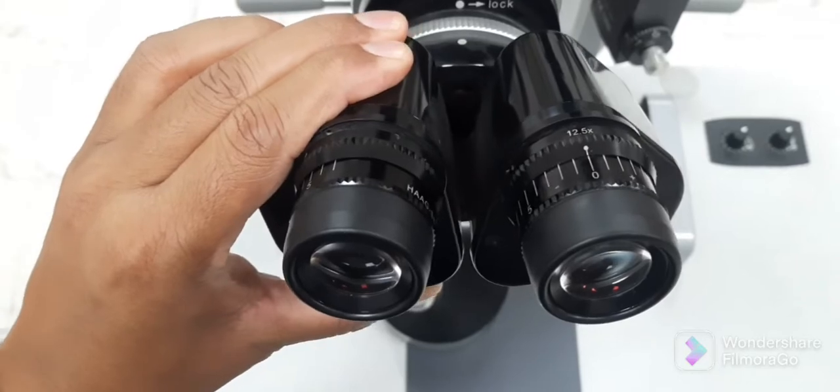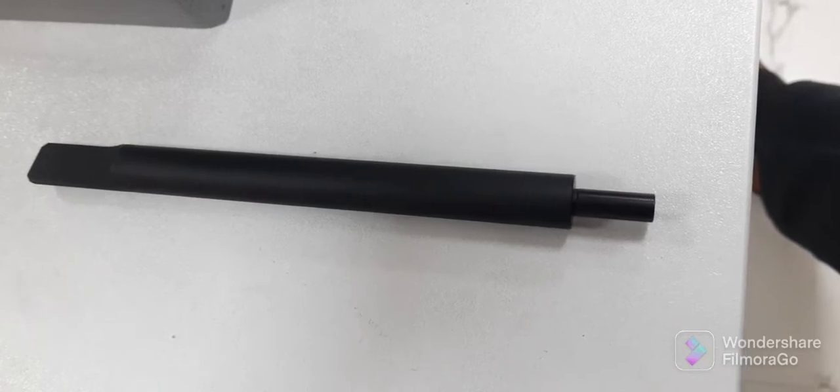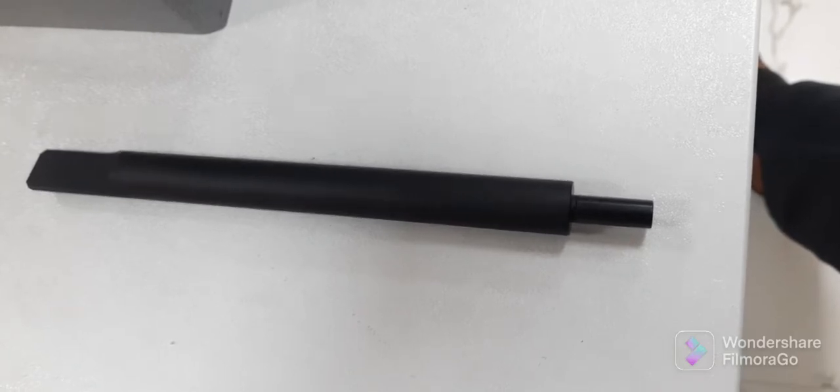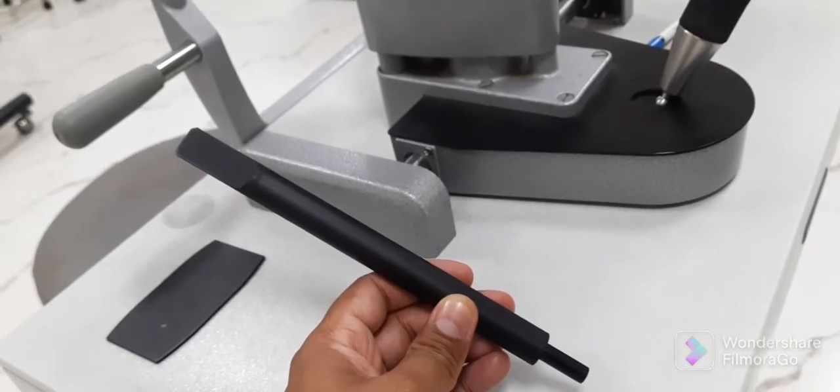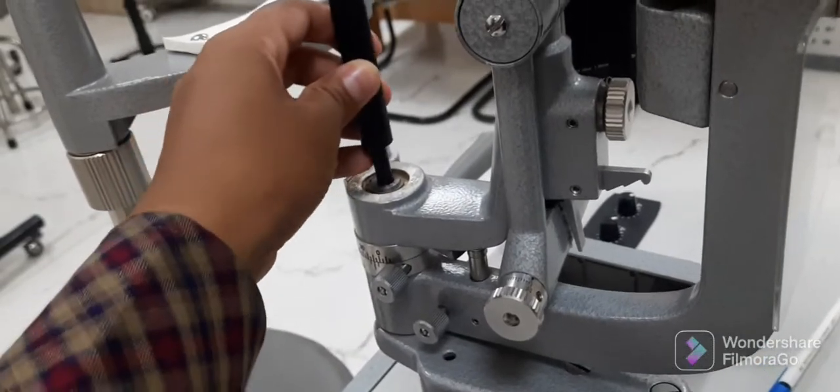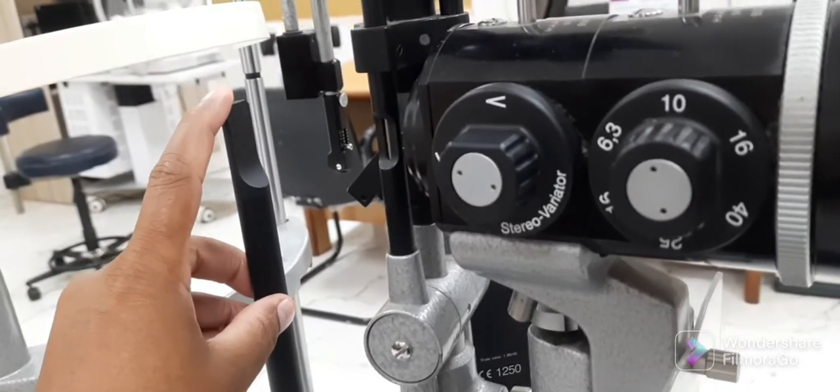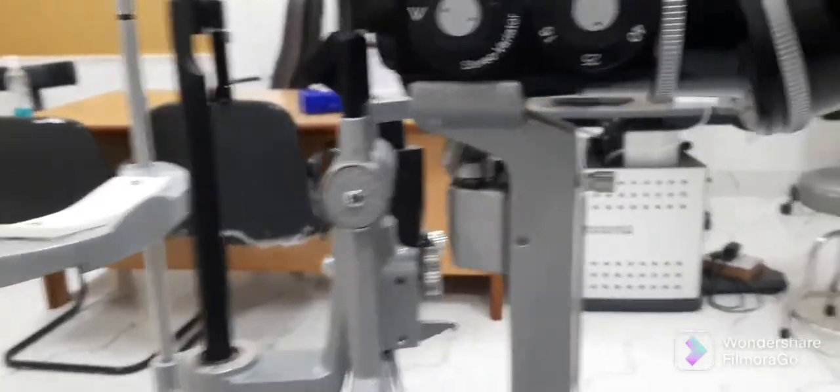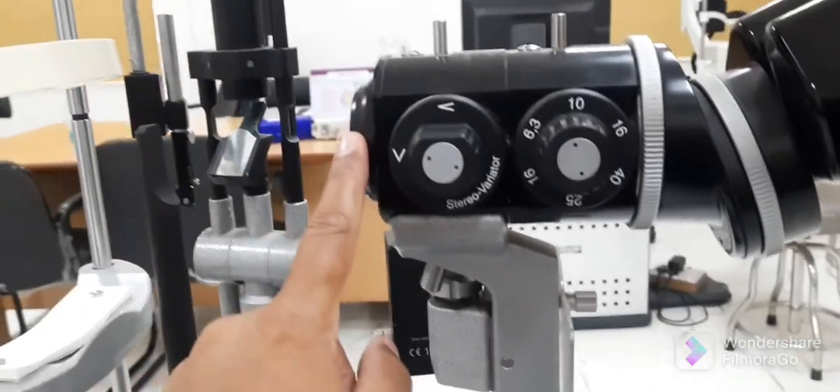This is the focusing rod which is used as a target to focus both the eyepieces of slit lamp before examining the patient. It is inserted on the slit lamp on the coaxial arm properly adjacent on the mount, so that its plane surface should be perpendicular to the observation arm or perpendicular to the lens of observation arm.